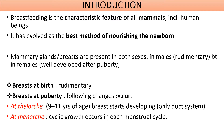Breastfeeding is the characteristic feature of all mammals including human beings, which has evolved as the best method of nourishing the newborn. The mammary glands or the breasts play an important role in the lactation process. Mammary glands are present in both sexes but are well developed only in females after they go through puberty.